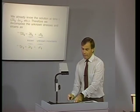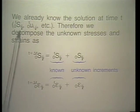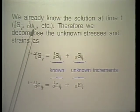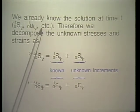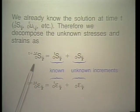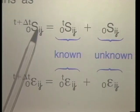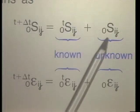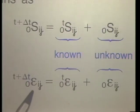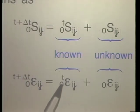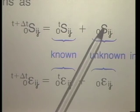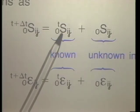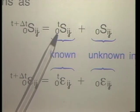The formulation proceeds as follows. We know the solution at time t, so the stresses, displacement derivatives, and all static and kinematic variables corresponding to time t are known. We decompose the stress at time t plus delta t into one known value and one unknown increment. Similarly, the Green-Lagrange strain at time t plus delta t is decomposed into a known value at time t and an unknown increment. These increments are unknown, whereas the time t values are known.